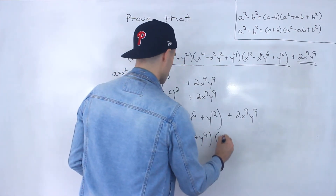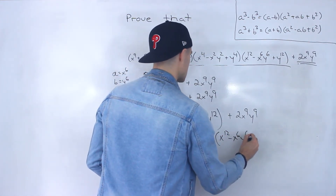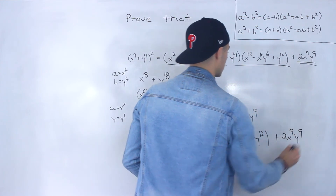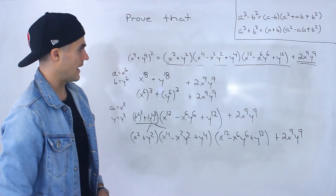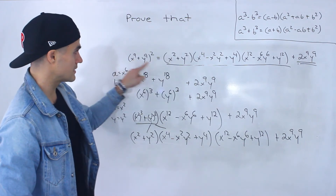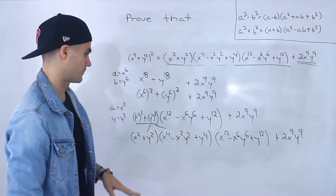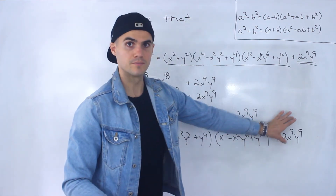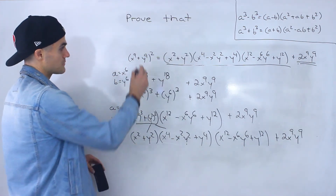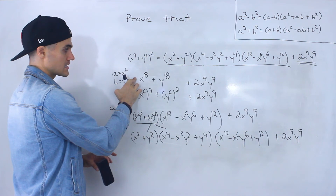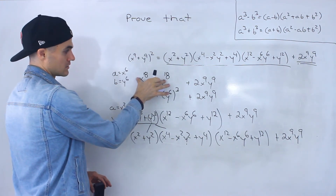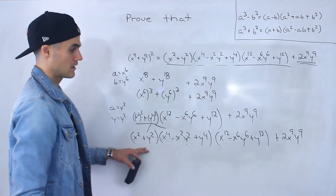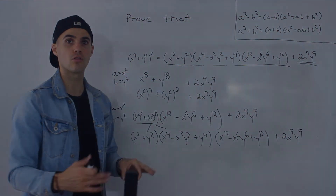So this bracket factors into those two. Then we rewrite the remaining bracket as x to the 12 minus x to the 6 y to the 6 plus y to the 12, and we still have 2x to the 9 y to the 9. Now notice that we've made this left side equal to the right side — it's the same three brackets and then that expression at the end. Quick recap of the steps: we first took this, expanded it, got it to this. Then we factored this expression as a sum of cubes, and then factored this expression as a sum of cubes again. We end up getting the left side equal to the right side.